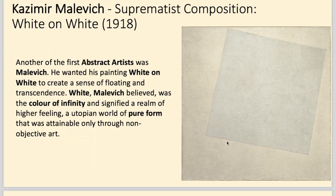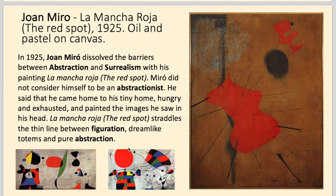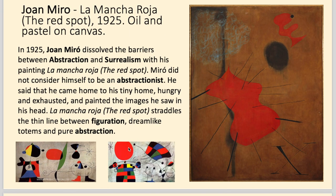Malevich continued along that vein — he was also trying to reach a spiritual place with his paintings. This picture was believed to signify a realm of higher feeling, a utopian world of pure form attainable only through non-objective art. And Miro painted very colourful, interesting little objects and shapes — they're almost figurative, some of them.